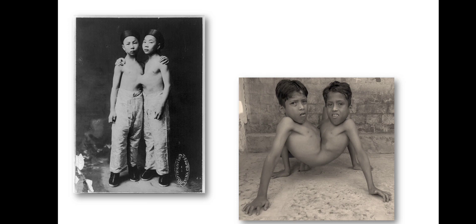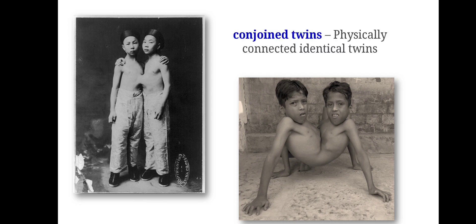In both identical and fraternal twins, there are some exceptional cases. One such case is conjoined twins — two babies who are born physically connected to each other. They are physically connected identical twins, and can also be referred to as Siamese twins.